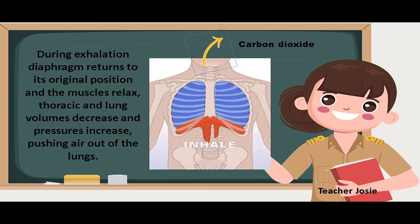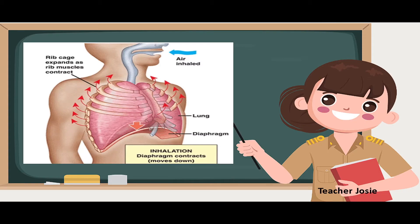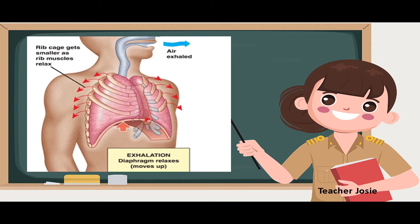To recap: during inhalation, the diaphragm muscles contract, the diaphragm moves down, and expands the chest cavity. During exhalation, the diaphragm muscle relaxes, and the diaphragm, ribs, and chest cavity return to their original place or normal size.